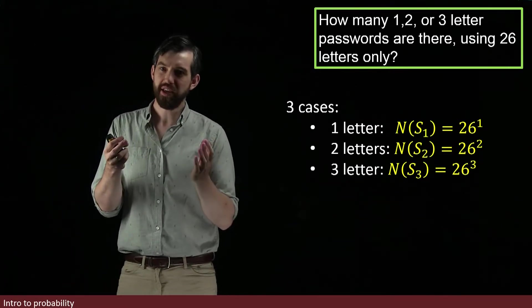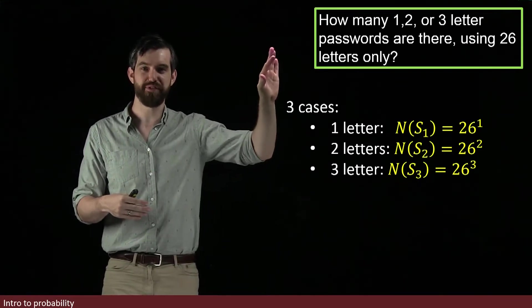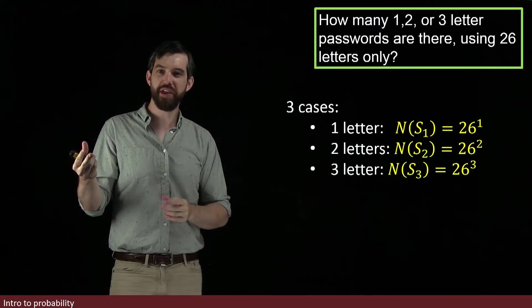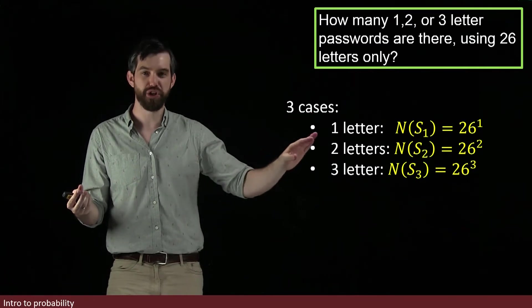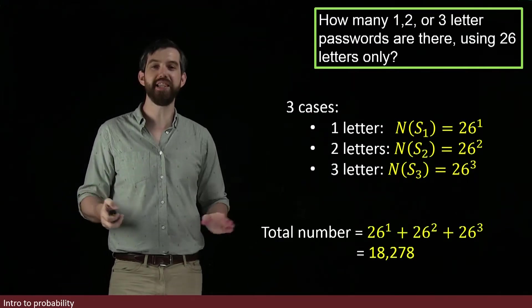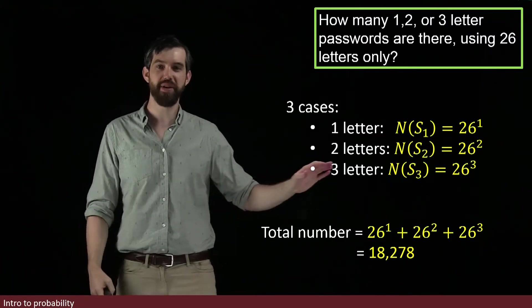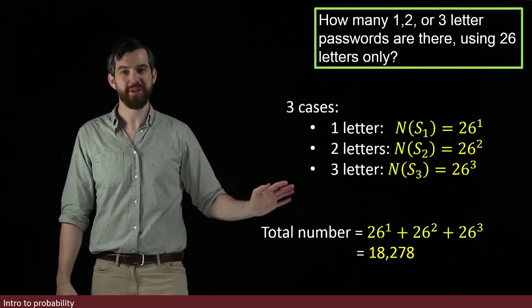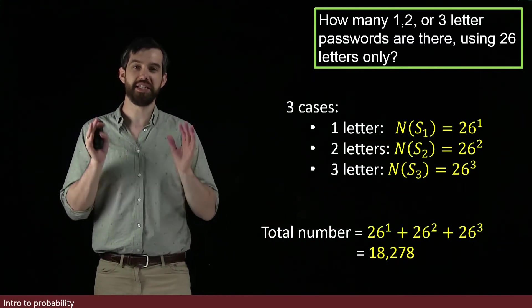And then, the final answer, what are the total number of passwords? If I'm allowing one-letter passwords, two-letter passwords, and three-letter passwords, then I'm just going to sum up these three cases. That's how many one, two, and three there are. So, I'm going to say that my total is the sum of those three cases. It's going to be the 26 to the one, plus the 26 squared, plus the 26 cubed, and if you compute it out, you get this number, 18,278 different passwords.